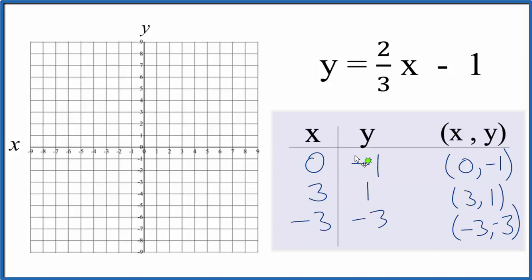x is zero, y is negative one. Then we have x is three, y is one. And finally, we have negative three for x, negative three for y.